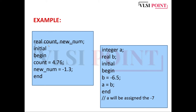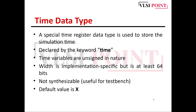Consider this example: count and new_num are declared as real variables. count is assigned 4.76 and new_num is assigned minus 1.3. Variables a and b are also declared — a is of integer type and b is of real type. When the real value minus 6.5 from b is assigned to integer a, it is rounded off to the nearest integer, giving a the value minus 7.